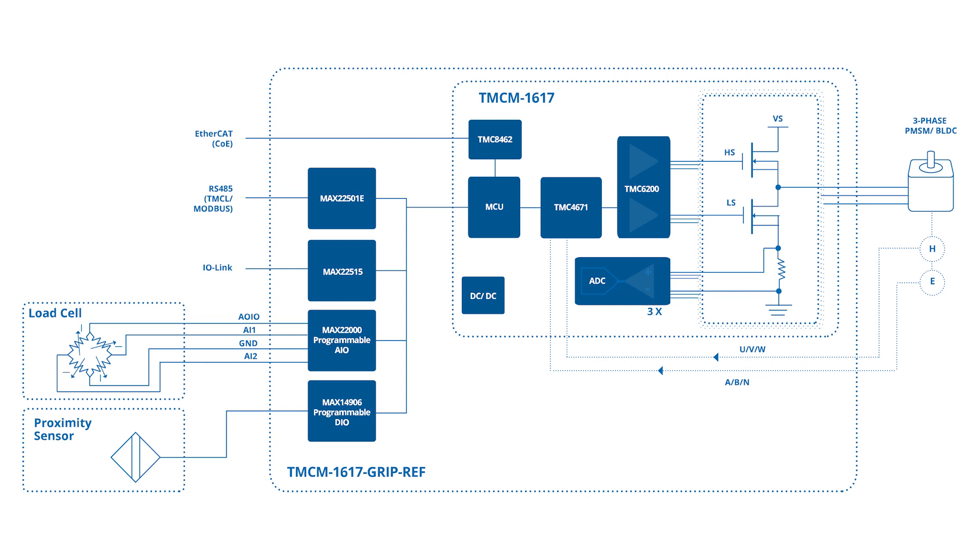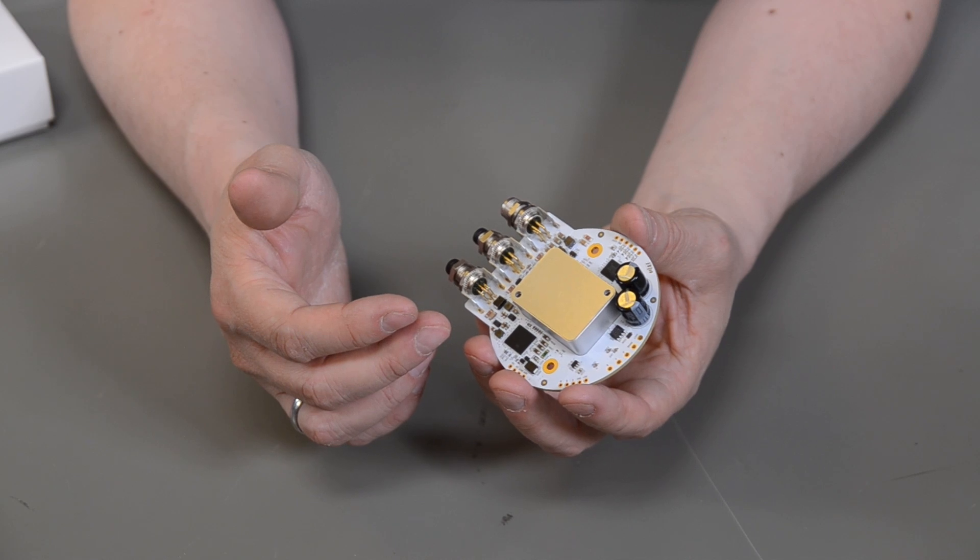MAXIM's MAX22000 enables an analog sensor interface to evaluate torque or similar sensors, like for example load cells for detecting the force at the gripper.